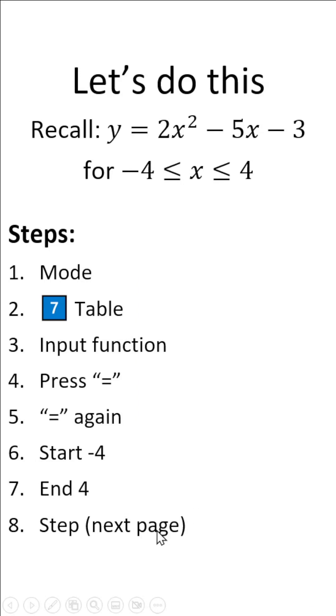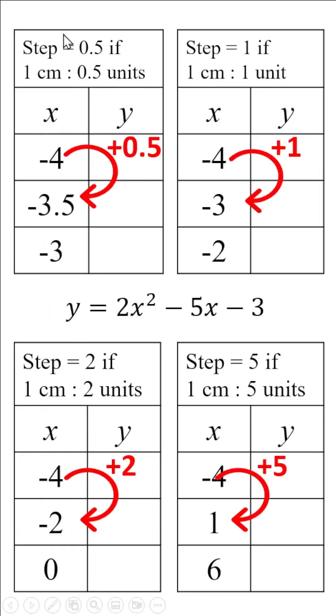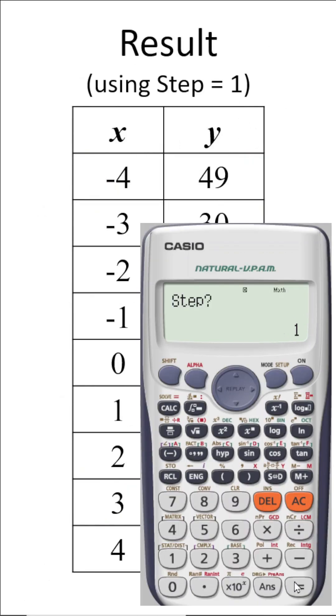And for the step, depends on the increment we need. For example, if we wish to have a step of 0.5, the value should increase by 0.5 for each step. If we need a step of 1, each value increase 1 before the next. And so on. Let's take a step of 1. Press equal.